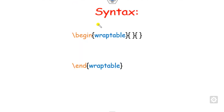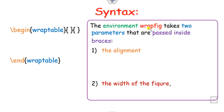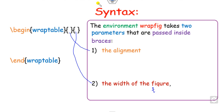Once you have written the package in the preamble, the syntax for wrapping text around a table uses \begin{wraptable} and \end{wraptable} with two curly brace parameters. In wraptable, there are two parameters: the first corresponds to alignment, and the second corresponds to the width of the table or figure.